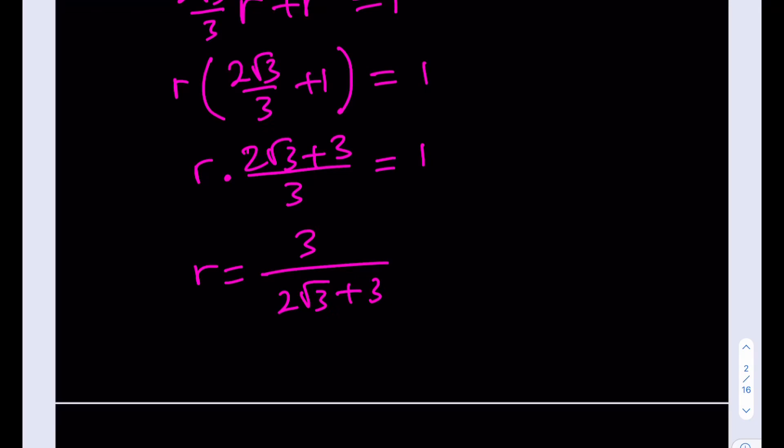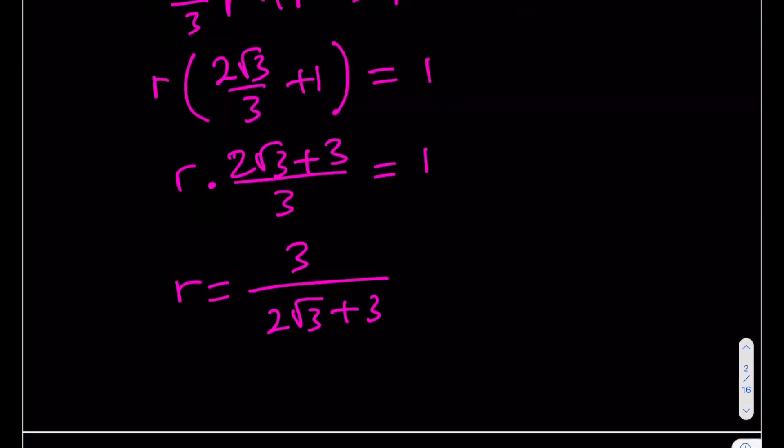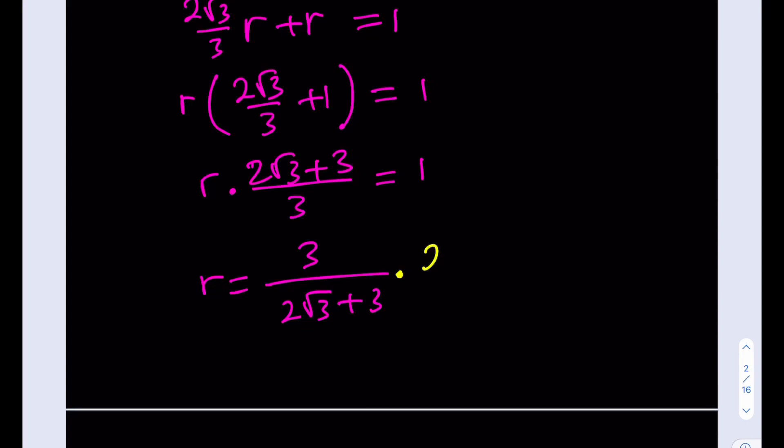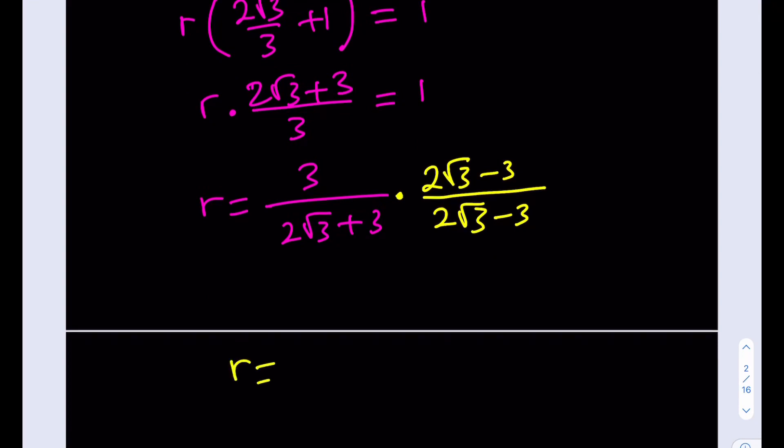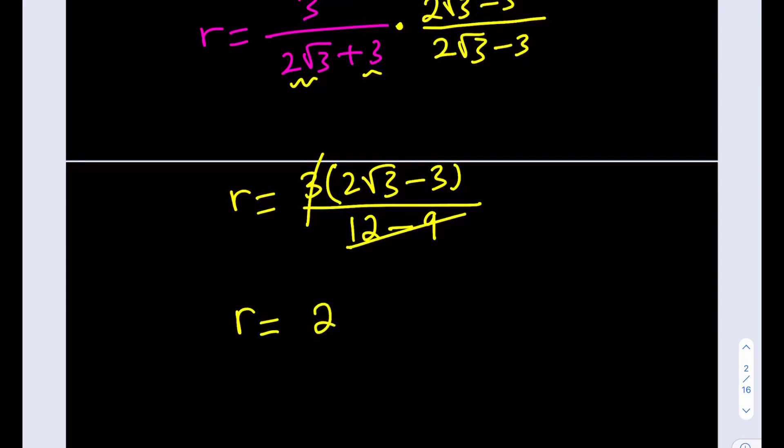We can rationalize the denominator to get a nicer answer. Let's multiply by the conjugate, which is 2 root 3 minus 3. This is better because 2 root 3 is greater than 3, so we'll get a positive answer. After you multiply the top and bottom, the bottom is going to be this number squared minus this number squared, and that's 12 minus 9. 12 minus 9 equals 3, so these two terms cancel out, leaving us with a very simple answer. The radius of the circle is 2 root 3 minus 3.